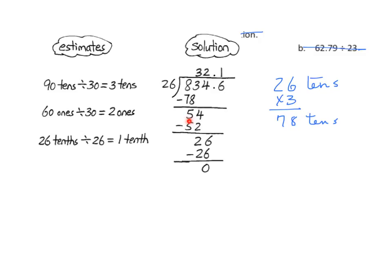5 tens is less than 26 — that's a good thing. Because if it's greater than 26, we know that we need to go back and make some corrections. So now we're going to trade my 5 tens for 50 ones, and I'm going to bring down 4 more ones, and I have a total of 54 ones.